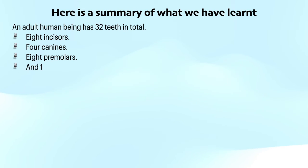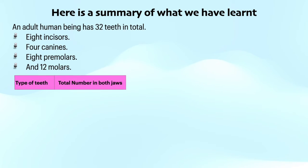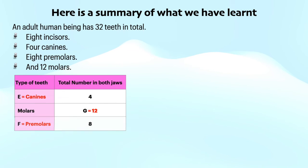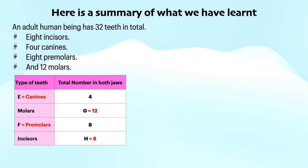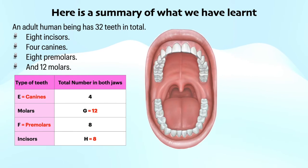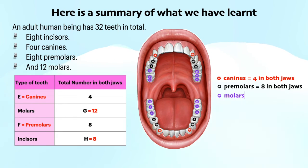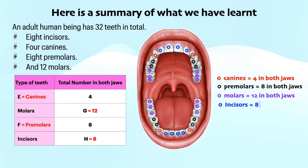Here is a summary of what we have learned. An adult human being has 32 teeth in total: a total number of 8 incisors — 4 are on the upper jaw and 4 are on the lower jaw. A total number of 4 canines — 2 are on the upper jaw and 2 are on the lower jaw.